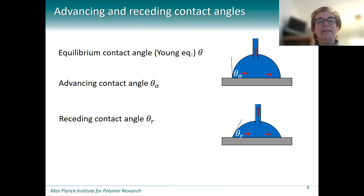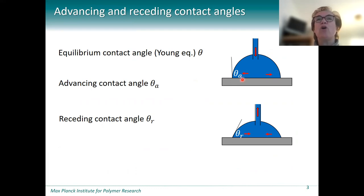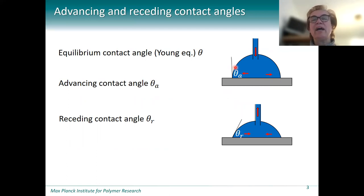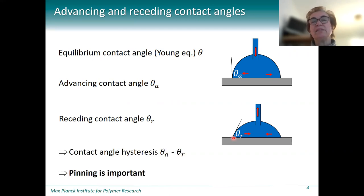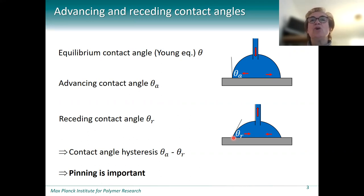In reality, that is rarely the case — actually never the case. So in reality, the contact angle always varies between the advancing angle and the receding contact angle. The advancing contact angle is the largest angle a droplet forms before the three-phase contact line advances. The receding angle is the smallest angle the droplet takes before the three-phase contact line recedes. The difference between these two angles is termed contact angle hysteresis, and this is a very important quantity that depends on pinning.